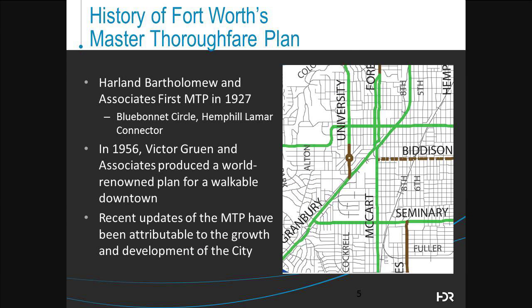From a historic perspective, thoroughfare planning in Fort Worth stretches back to the late 1920s. The Bartholomew plan recommended the Hemphill-Lamar connector and Fort Worth's first traffic circle at Blue Bonnet Road. In 1956, the Groon plan produced a more walkable downtown with a sidewalk system that enabled the downtown to grow. Many updates have been implemented since that time, mainly to address growth and development of the city, but also redevelopment of the community, particularly with the urban villages design.